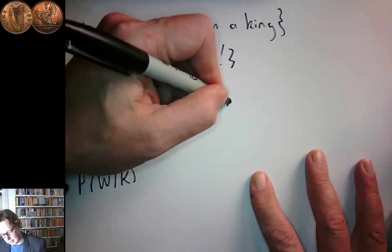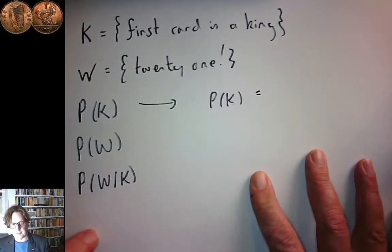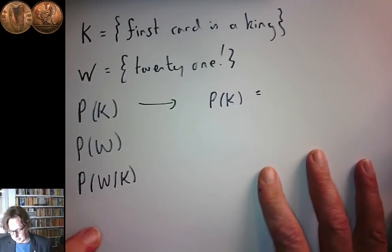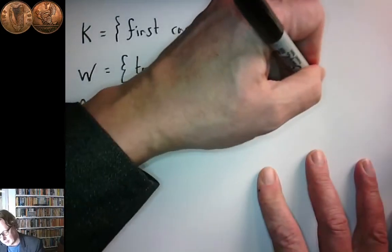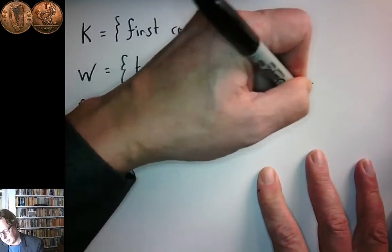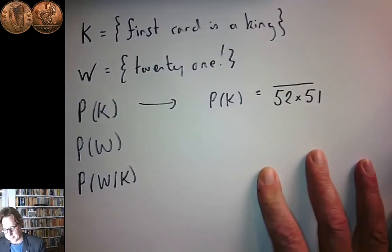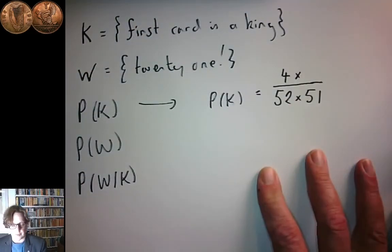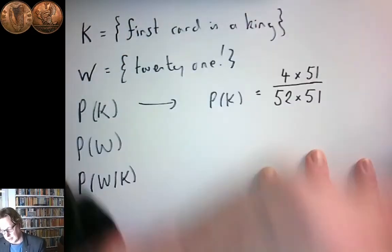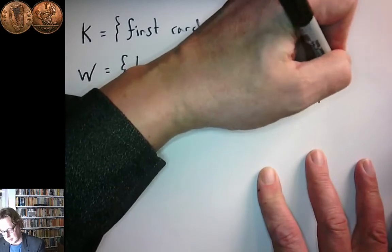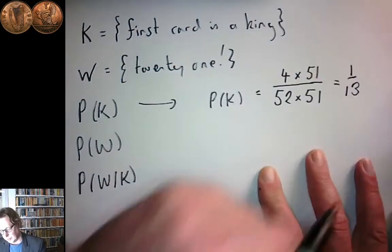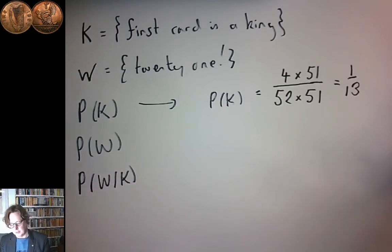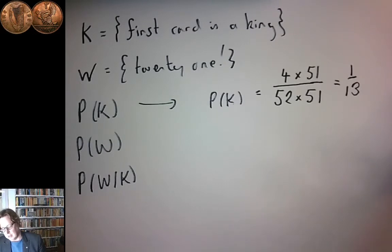What's the probability that you get a king? One way to look at it: the total number of hands involves drawing 52 possible first cards and 51 second cards. If you draw a king first, there are four kings you could have drawn, and 51 remaining cards. But there's a simpler way: 1 in 13 of the cards is a king, so the probability that the first card is a king is 1 over 13.